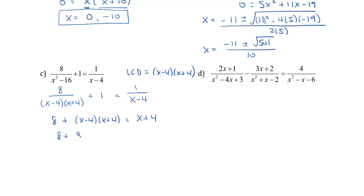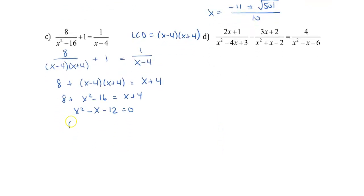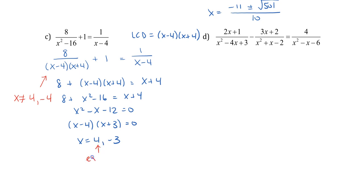Expanding and moving everything to one side, this one factors nicely: (x-4)(x+3) = 0, giving x = 4 and x = -3. However, going back to the factored form, x cannot equal 4 or -4. Since x = 4 is one of my solutions, that is an extraneous root. Therefore my only solution is x = -3.